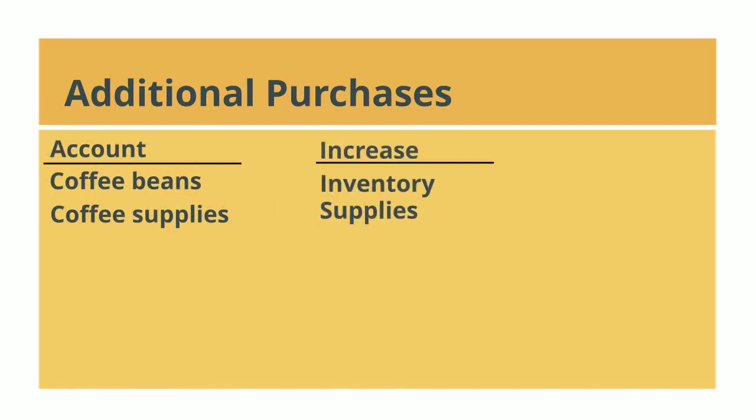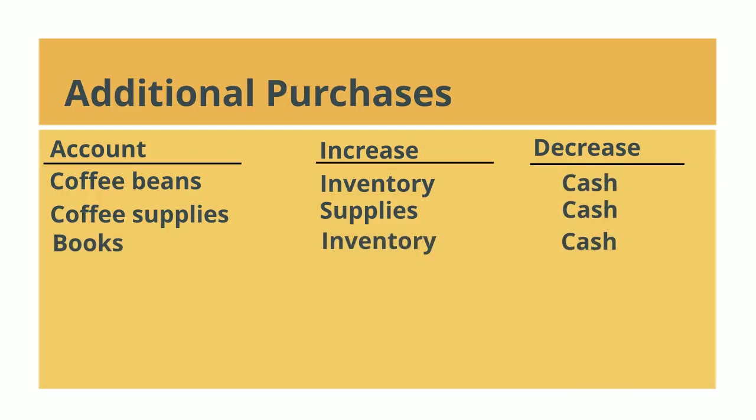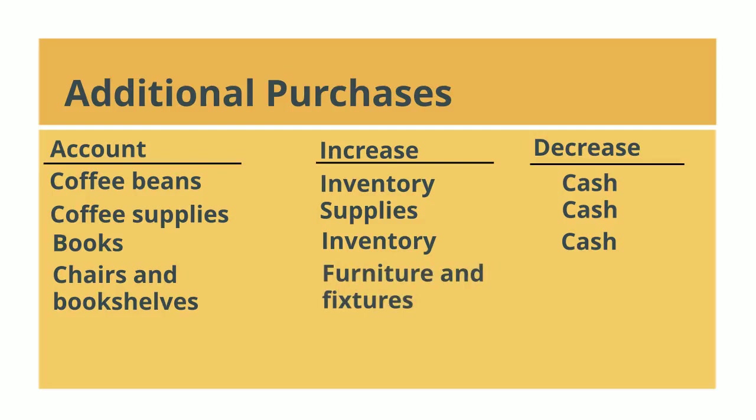The other transactions would be similar. Purchasing coffee beans and supplies would increase inventory and supplies and decrease cash. Purchasing books would increase inventory and decrease cash. Purchasing those comfy chairs and bookshelves would increase an asset called furniture and fixtures and would also decrease cash.